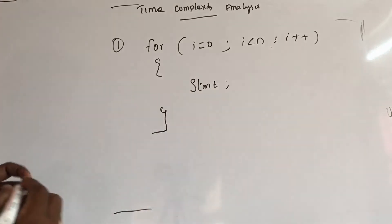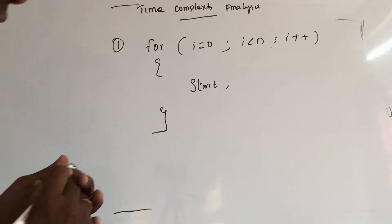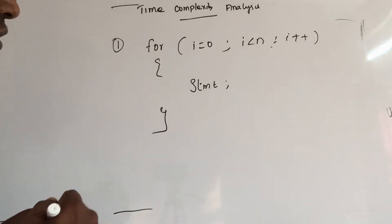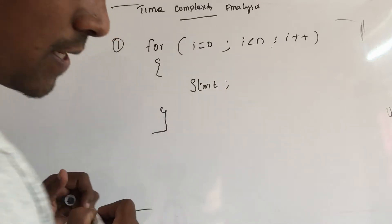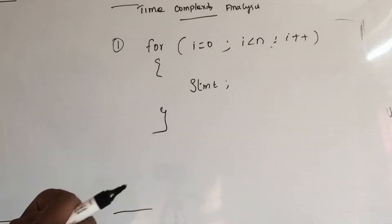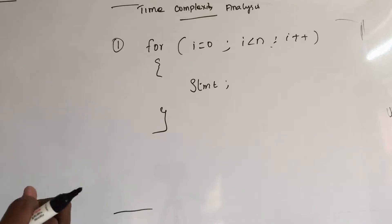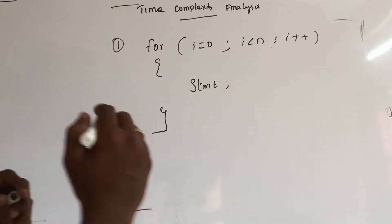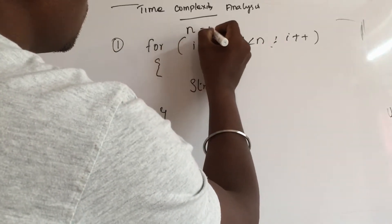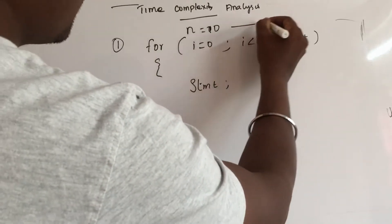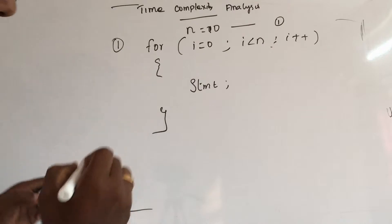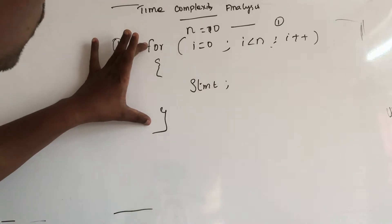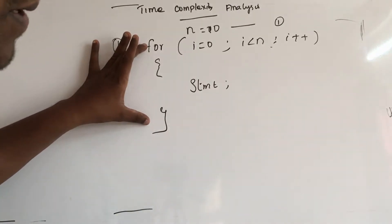This is a time complexity example. I will show you the same thing. Each line is 1 unit of time. For example, n is equal to 10 — this is 1 unit of time execution. Each line item is 1 unit of time. But the for loop calculation is a little different. The for loop condition is checked multiple times, so the execution process is a little different.